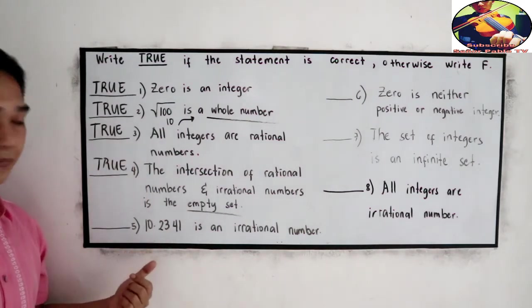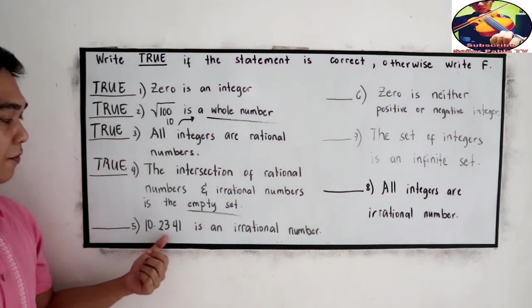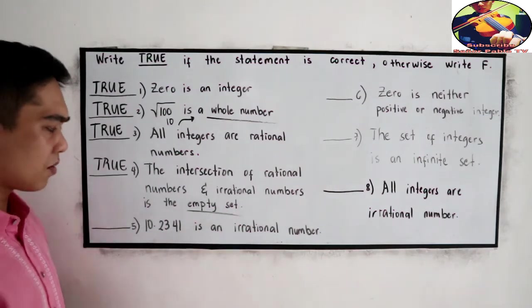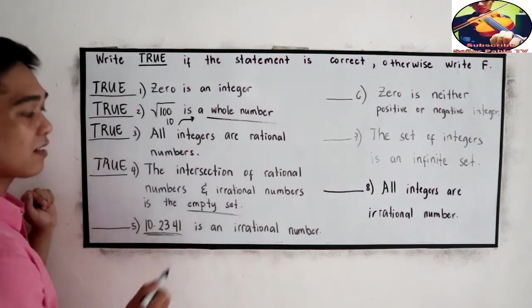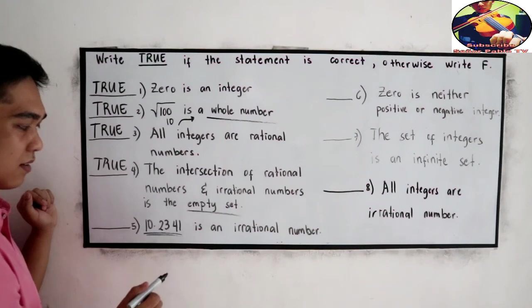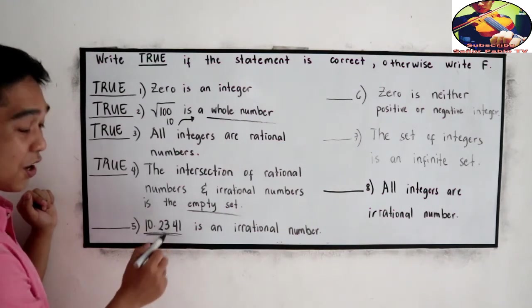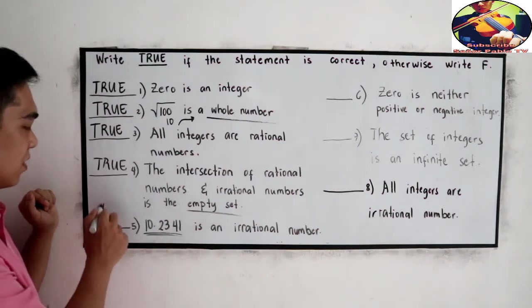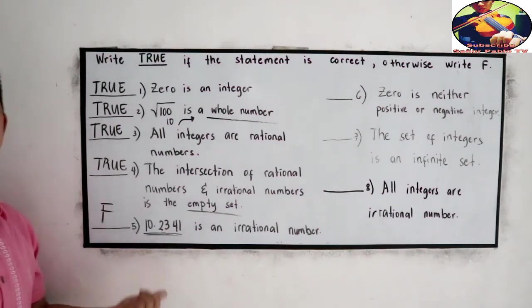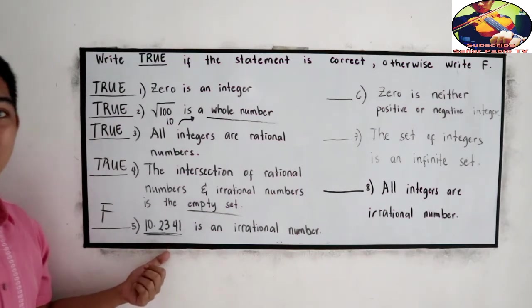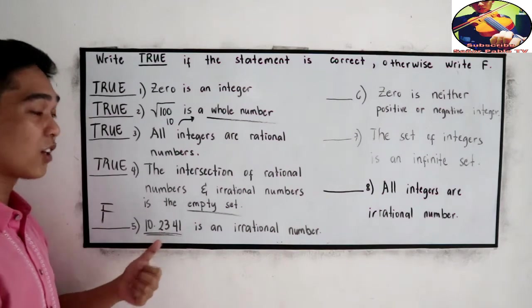Number 5, 10.2341 is an irrational number. It is a decimal, but it is a terminating decimal. So this is a rational number. We can write it as a fraction.